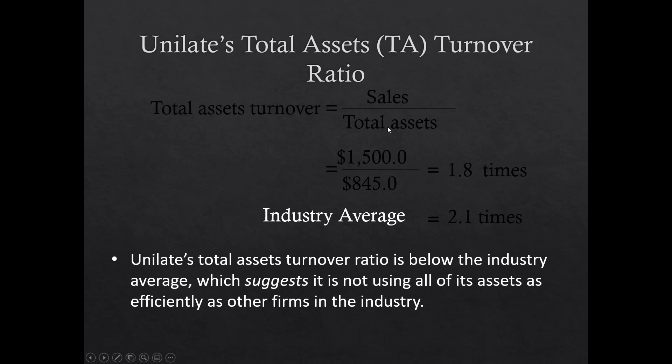Total asset turnover equals sales divided by total assets: $1.5 billion / $845 million = 1.8 times; industry average is 2.1 times. We already know accounts receivable and inventory are high and cash has declined, while fixed asset turnover is about on par with the industry. This explains why total asset turnover comes out below industry average — the inefficiencies in inventory and receivables are dragging it down.